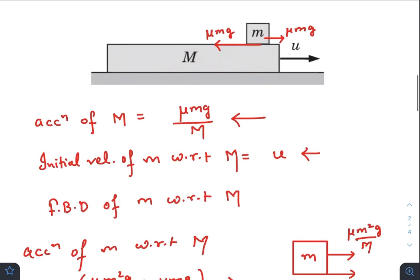So just after placing the mass small m over the plank, immediately the plank tries to pull this mass in its own direction. So there will be a frictional force on small m towards right that would be μmg.